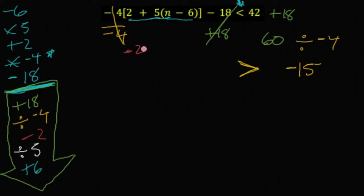Minus 2 gets rid of a plus 2. Divide by 5 gets rid of a times 5. Plus 6 gets rid of a minus 6.